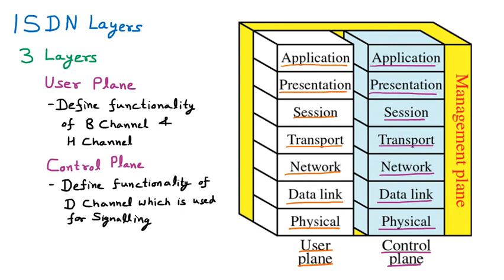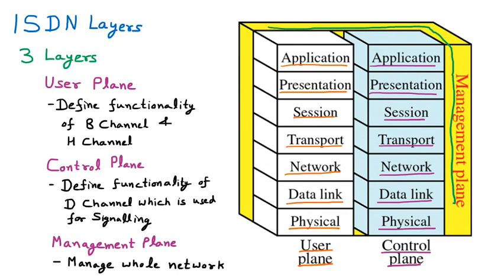The last plane is the management plane. Looking at the diagram, the management plane encompasses both the user plane and the control plane — meaning it also takes care of both of them. The main task of the management plane is to manage the user plane and the control plane, as well as manage the whole network.